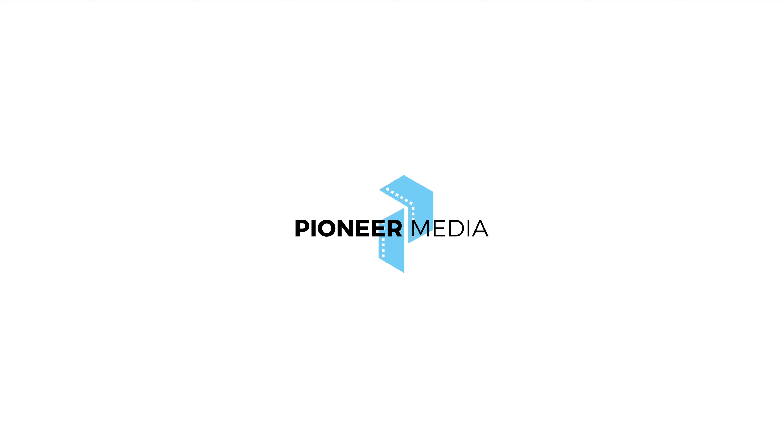The R5C has a micro HDMI and the A1 has a full-size HDMI, which is nice. The R5C does have dual card slots — one is a CFexpress Type B and the other is an SD card slot. The A1 also has dual card slots that double as CFexpress Type A slots. Both cameras do 24-bit audio recording with an attachment, and there are no internal ND filters on either camera.